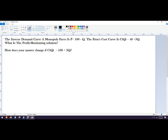Okay, so we've got inverse demand function P equals 100 minus Q. The cost curve, or sometimes said the total cost function, is 40 plus 5Q. What's the profit maximizing solution? So what we're trying to solve for is marginal revenue equals marginal cost. I need to figure out what those are.